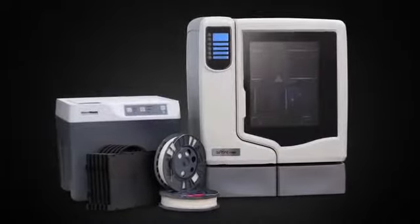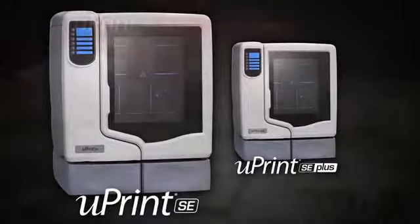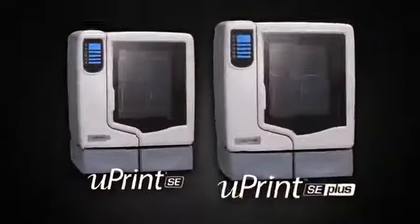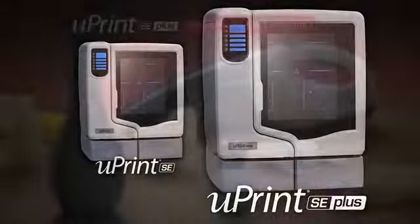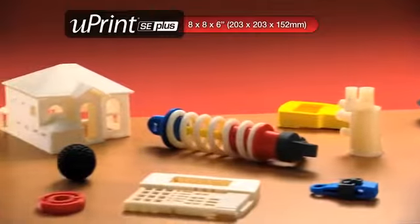There are no hidden costs and nothing extra to buy. And you have a choice of two models. The U-Print SE for ivory models up to 8 x 6 x 6 inches. Or the U-Print SE Plus with a larger build envelope, faster print speed and your choice of 9 modeling colors.